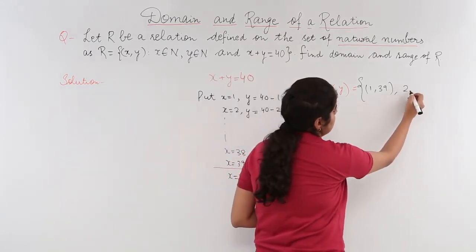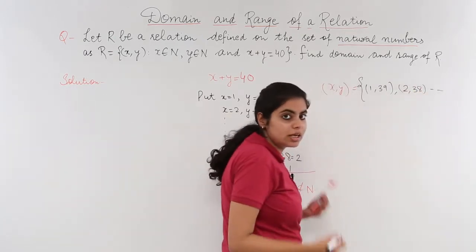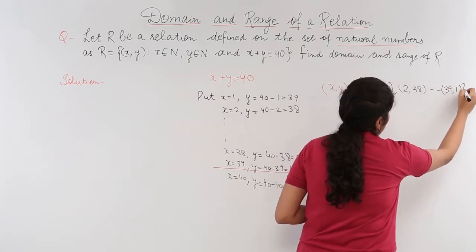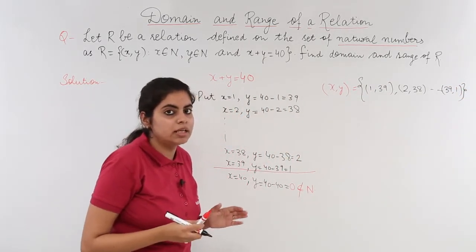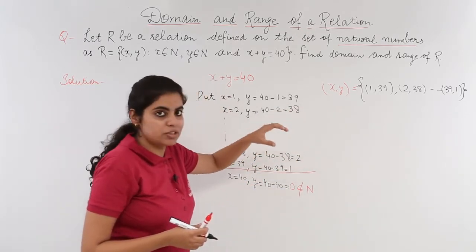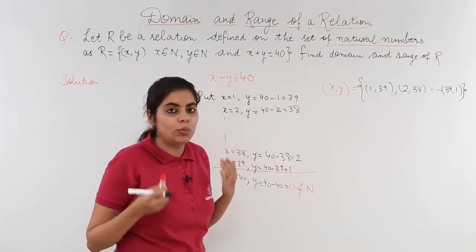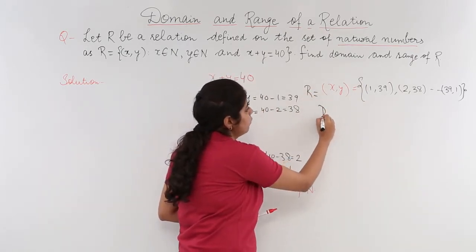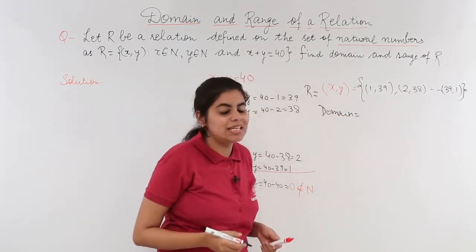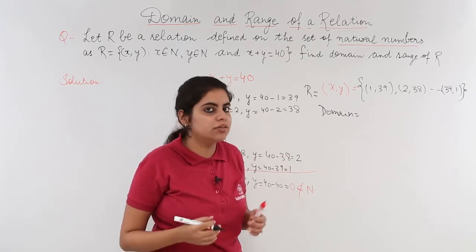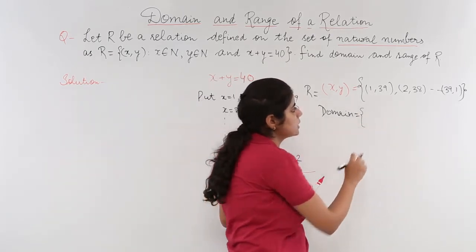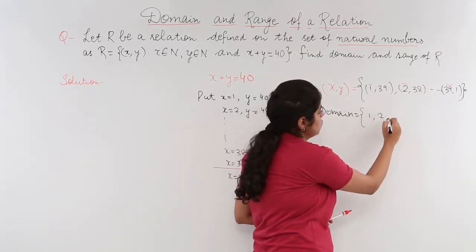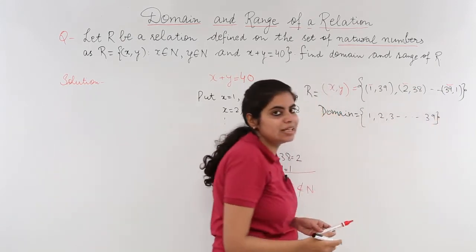Let's see: (1,39), (2,38), and this condition continues to our last (39,1). Now, 39,1 is the last ordered pair. Now, let's see what the question says. The question did not ask me to find relation. The question asked me to find domain and range of R. If this is my R, let's see what is the domain. The domain is the set of first values of any relation. So the first values of ordered pair would be 1, 2 and so on till 39. So I write 1, 2, 3 and so on till 39. This is my domain.